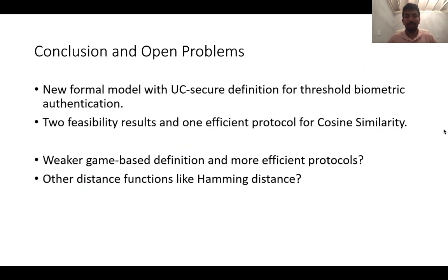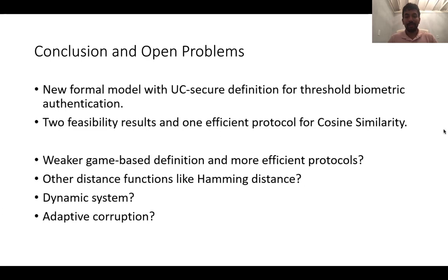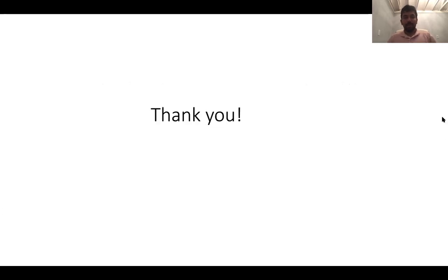How about considering other distance functions, like Hamming distance, which is popularly used for iris scans? Can we consider a dynamic system where devices can be added and removed dynamically? And finally, can we consider the case of adaptive corruption? Our protocols and security proofs consider only static corruption. Thank you, and that's the end of my talk.